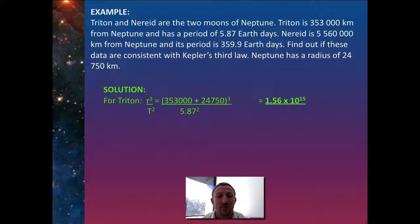We look at Triton to start with. Its distance is taken into the distance from Neptune as well as the radius divided by the time it takes. We've got 5.87 squared days—that's our time period. We've got our radius, which is the distance from Neptune to Triton, and we get 1.56 × 10¹⁵.